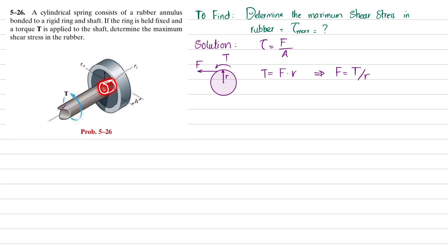Now, the area of the shaft in contact with the rubber annulus — this is a cylindrical shape — so the area will be equal to 2πr times h, where 2πr is the circumference and h is the height (thickness). So the shear area will be 2πrh.